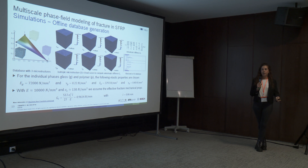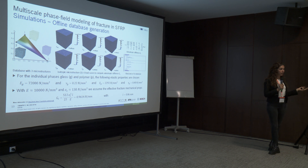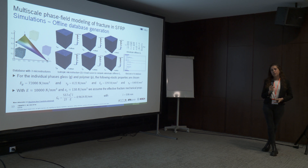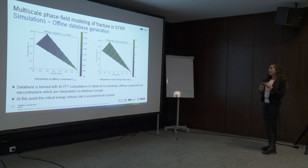From the stiffness matrix we only need 21 independent values. These are stored in a database — initially an XML file, which is then transformed into an HDF5 file. For the individual phases we consider these stiffness values. The effective fracture property Gc is currently constant across all microstructures, which is an assumption since we do not yet have experimental values or a dedicated model — this is under discussion.